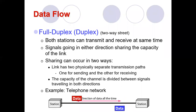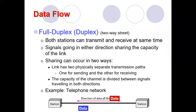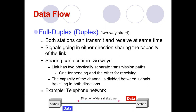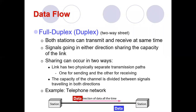The best example of full duplex is the telephone network. When you are on a telephone call, you can simultaneously talk and receive. Full duplex is used when communication in both directions is required all the time — whenever simultaneous two-way communication between both stations is needed, we use full duplex mode.